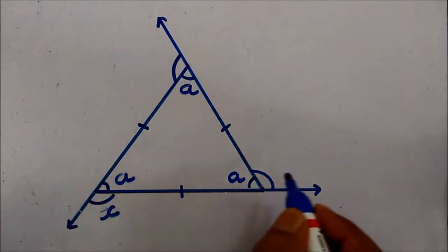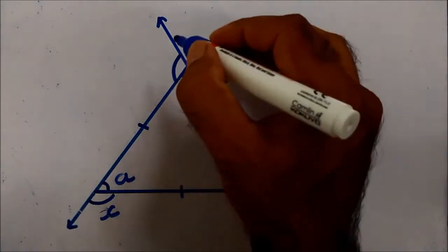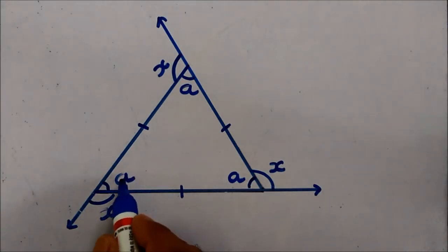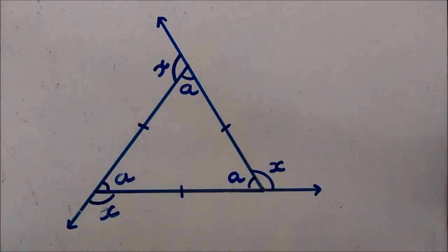So assume that x degree. Now a plus a plus a, that is the angle sum property of a triangle. A plus a plus a.